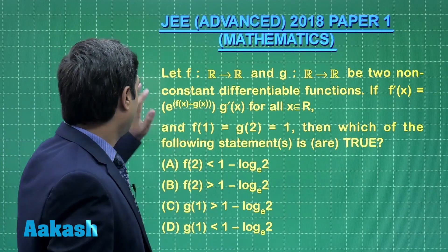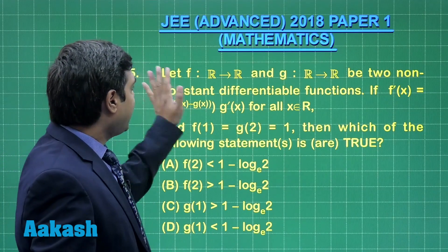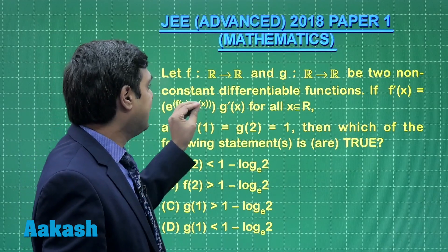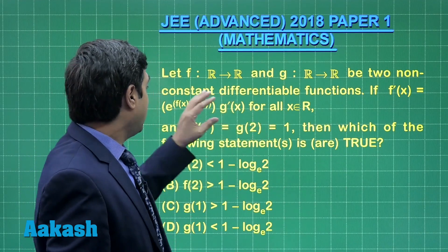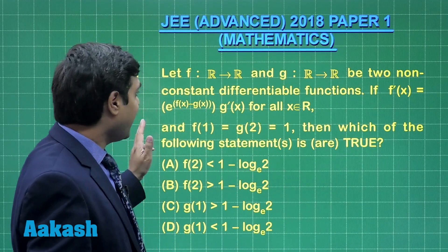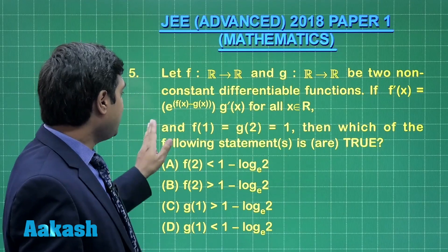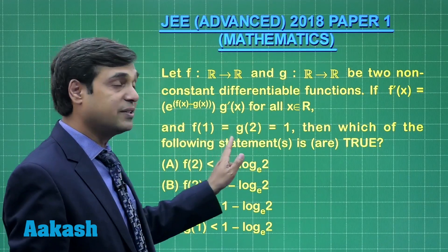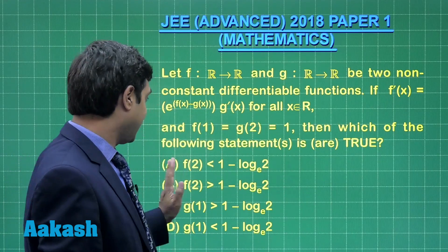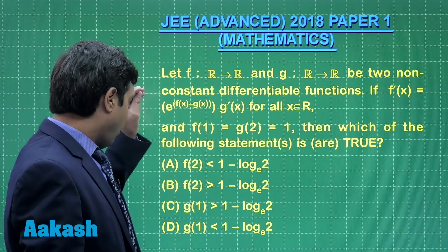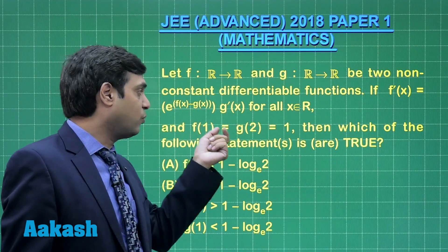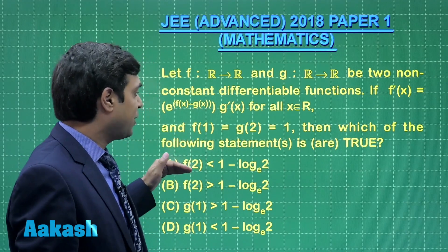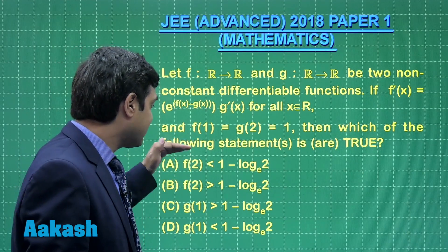Let us take question number 5. Let f and g be two non-constant differentiable functions. If f'(x) is equal to e to the power (f(x) minus g(x)) into g'(x) for all real values of x. Also given f(1) equals g(2) equals 1. Which of the following statements are true?